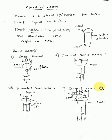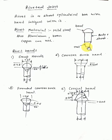Hello friends, welcome to MacnoTech YouTube channel. Today we are going to see riveted joints. First of all, what is a rivet? A rivet is a short cylindrical bar — you can see in the figure here — the cylindrical bar is given, and this is the head and tail integral with it.